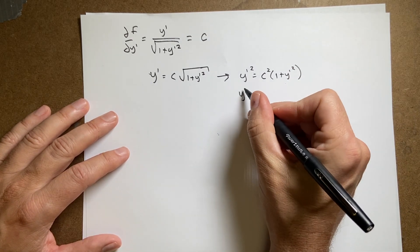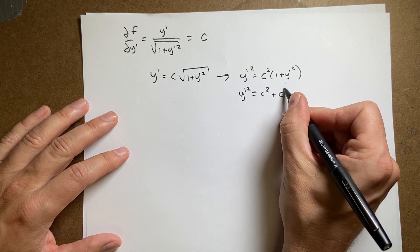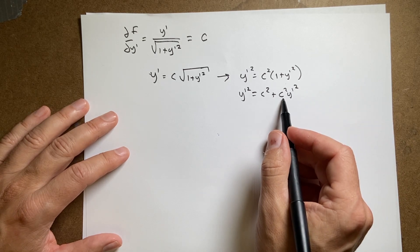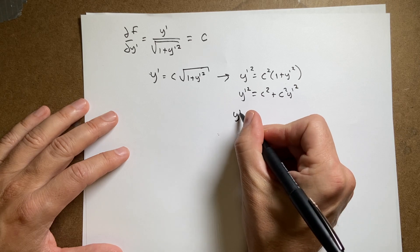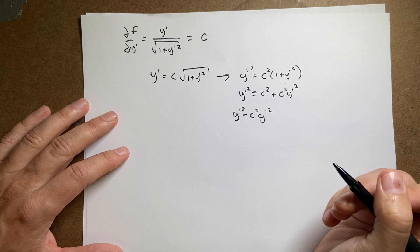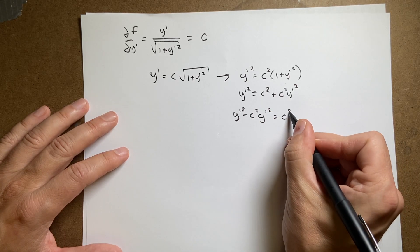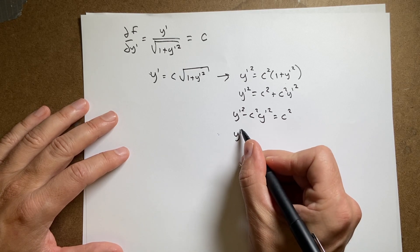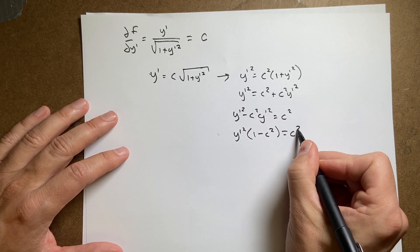Now, let's multiply this out, and I get y prime squared equals c squared plus c squared y prime squared. Now, I'm going to subtract this from both sides. I'm going to say y prime squared minus c squared y prime squared, and I'm doing way more work than I need to. You could stop earlier, but equals c squared, and then I'm going to factor out the y prime, and I get y prime squared times 1 minus c squared equals c squared.